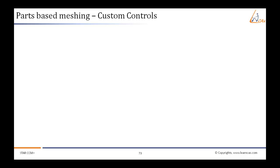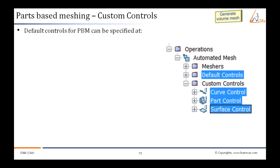Let us see custom controls for PBM. Default controls for PBM can be specified at Automated Mesh, then Default Controls. Similarly, we can specify custom control by going to Automated Mesh and then introduce Custom Controls.